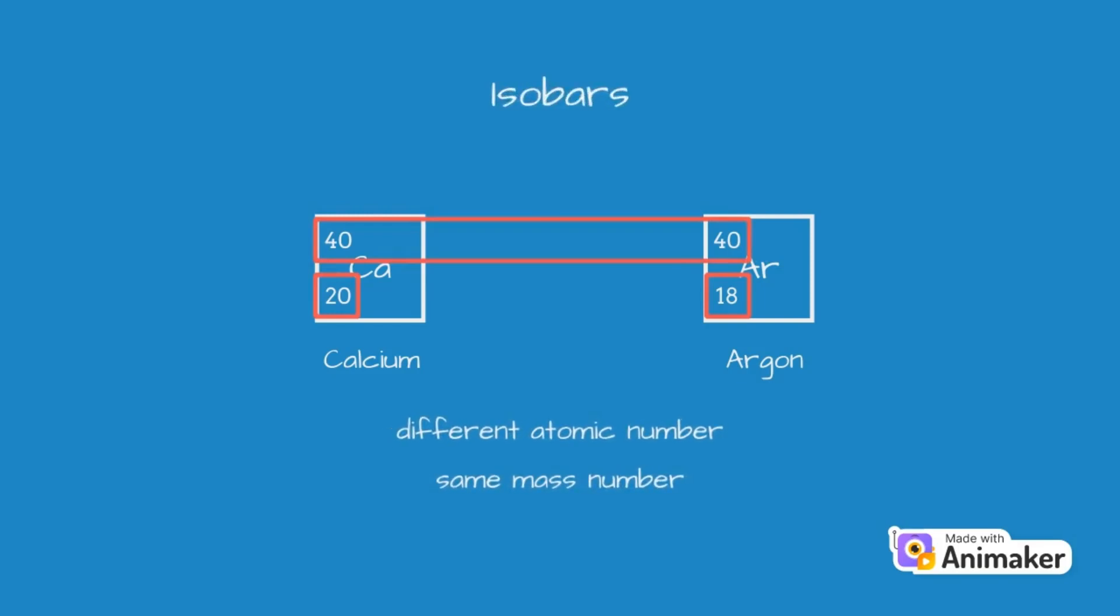Next, let's consider two elements, calcium and argon. Calcium has an atomic number of 20, and argon has an atomic number of 18, but both have the same mass number of 40. Atoms of different elements with different atomic number, but the same mass number are called isobars.